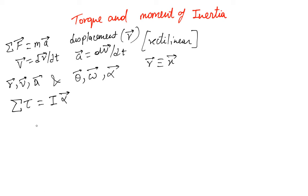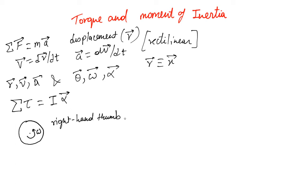This is how the direction of angular velocity and alpha are defined. If you have a circle or a disc moving with angular velocity omega, to find the direction you curl your fingers around the direction of motion, and your thumb tells you the direction of omega. This is called the right-hand thumb rule. For this disc rotating this way, omega has a direction coming out of the plane.